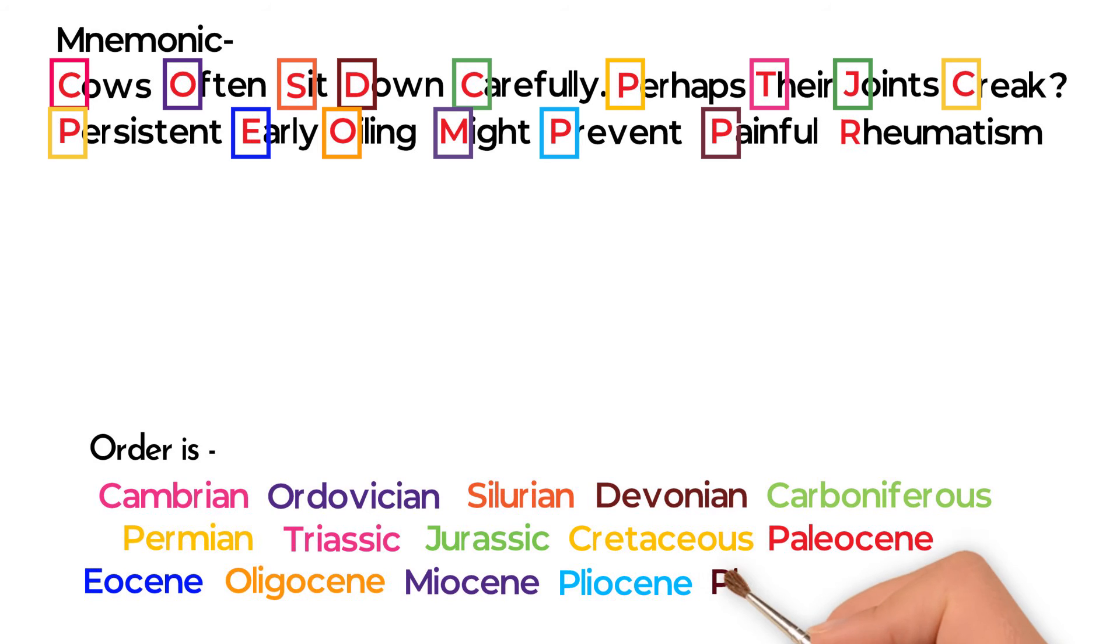P in Painful for Pleistocene, R in Rheumatism for Recent.